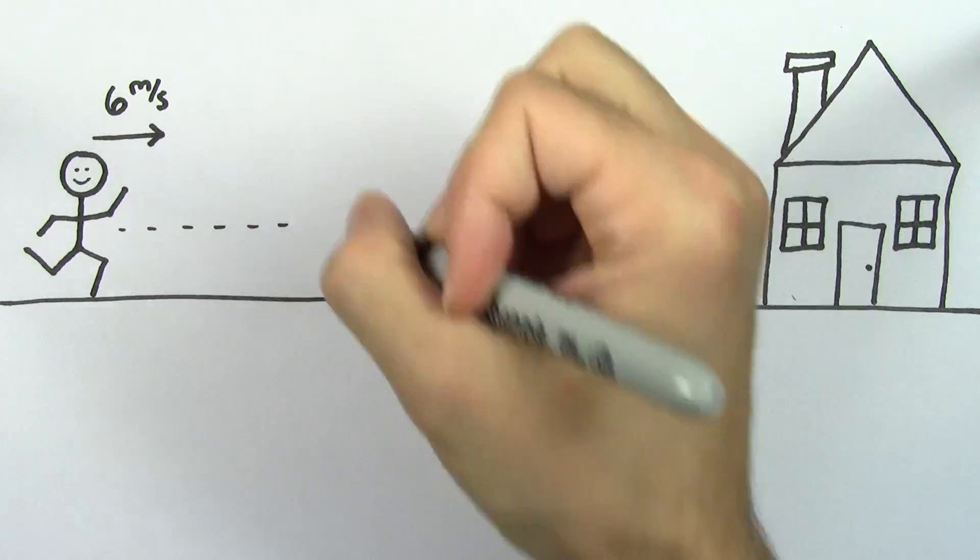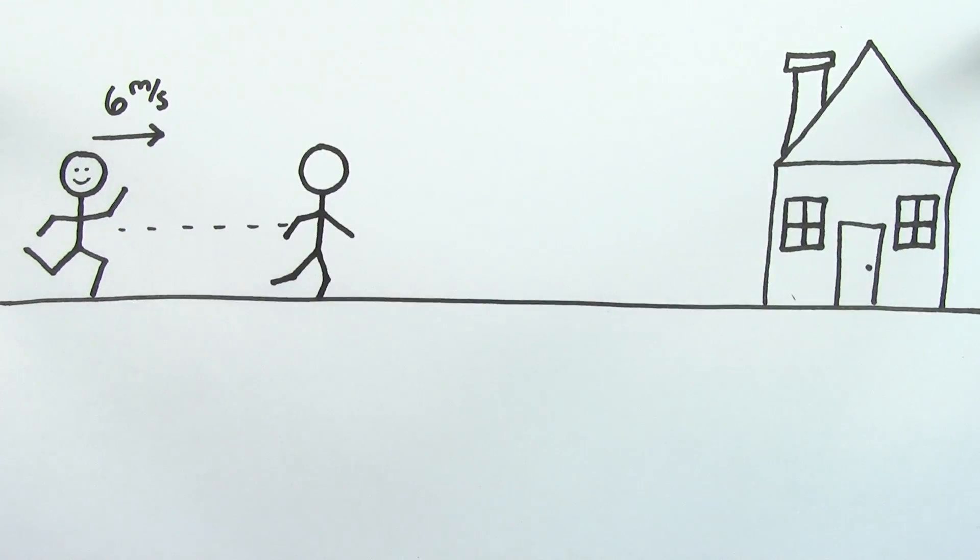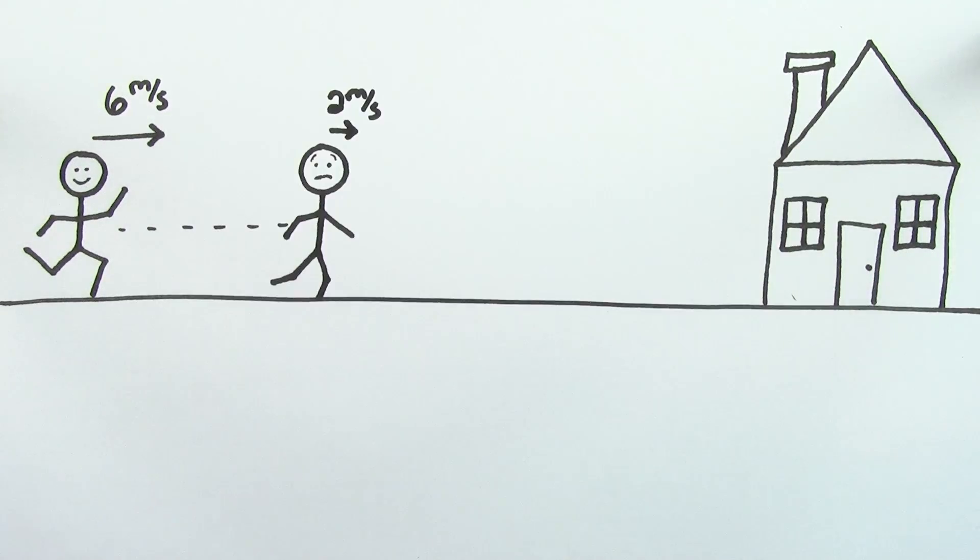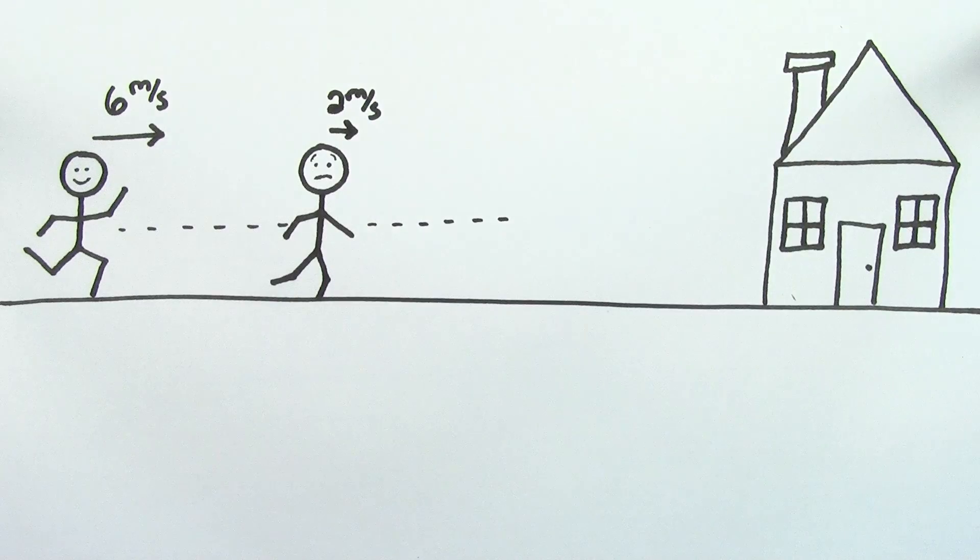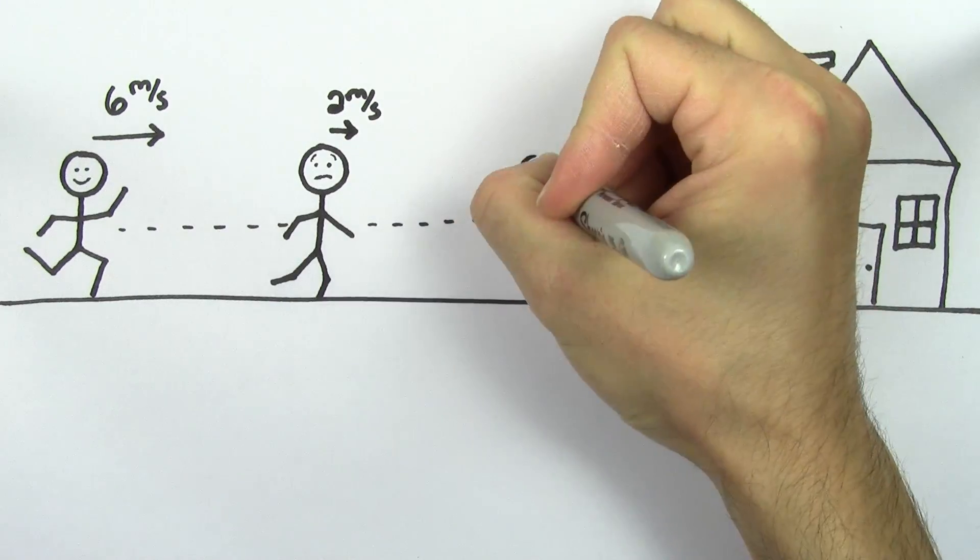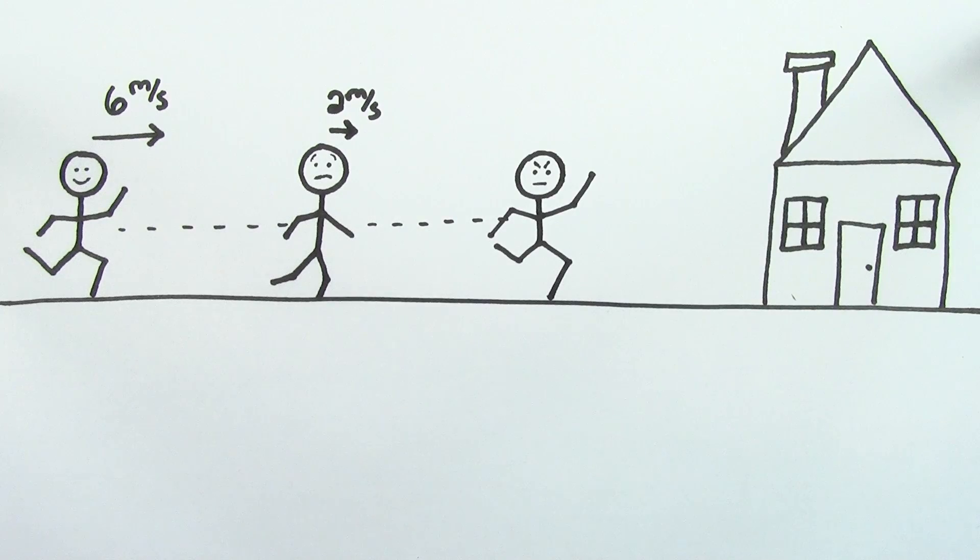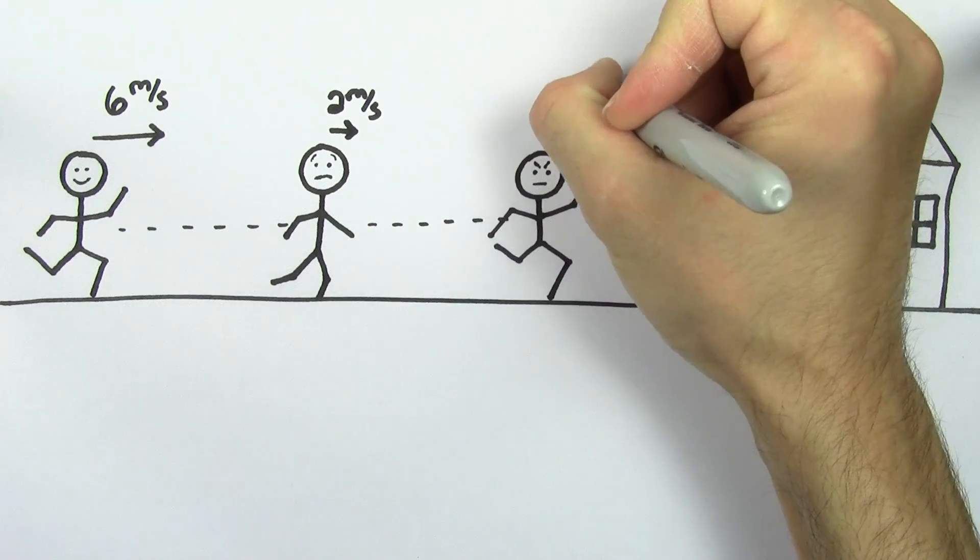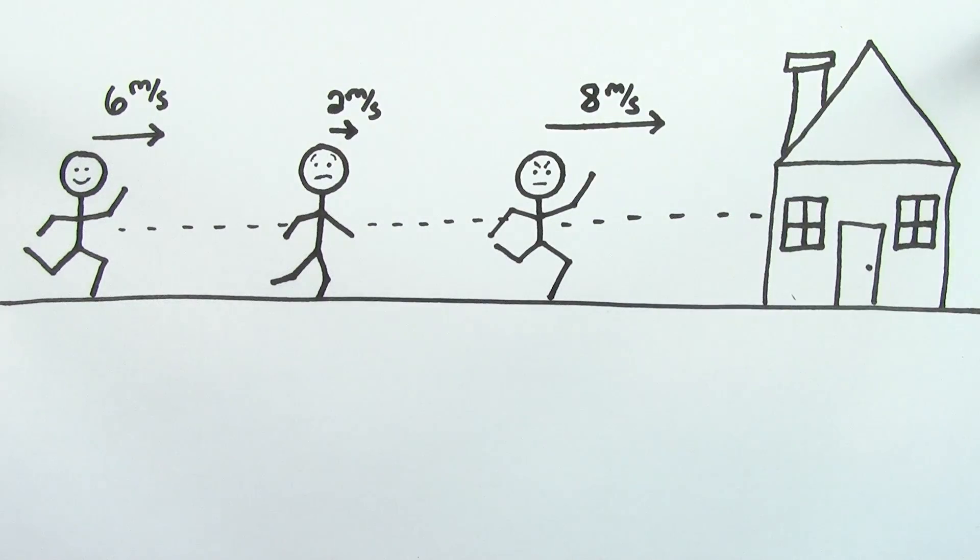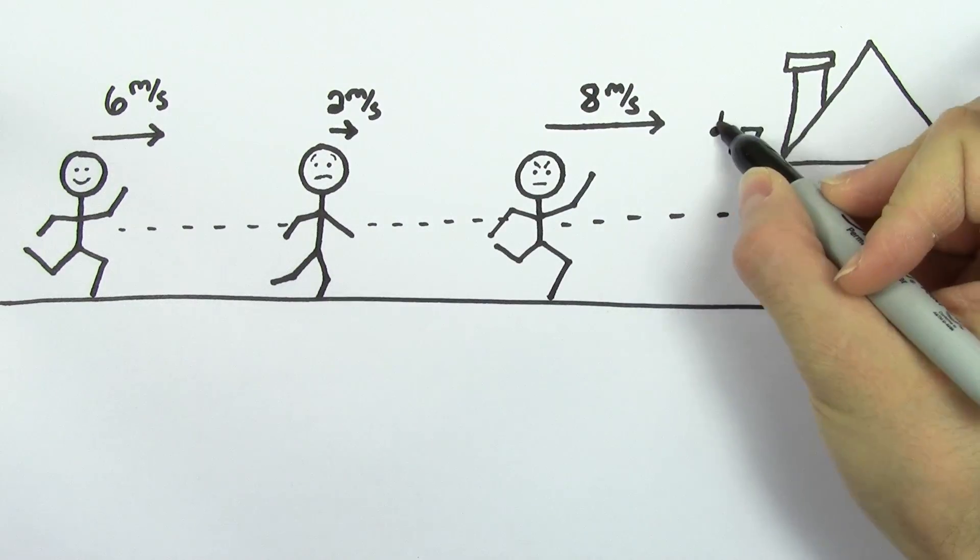You're pretty motivated to get home, so say you start running at 6 meters per second. Maybe it's been a while since you last ran, so you have to slow down a little bit to 2 meters per second. When you get closer to home, you say no, Captain Antares wouldn't give up, and I'm not giving up either. You start running at 8 meters per second and make it home just in time for the opening music.